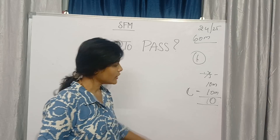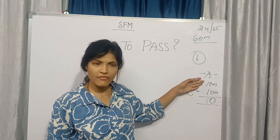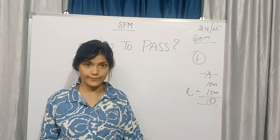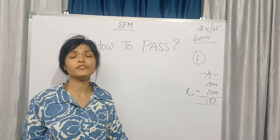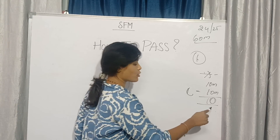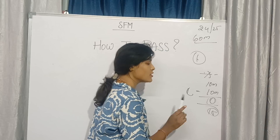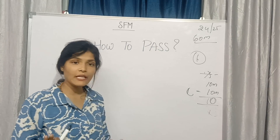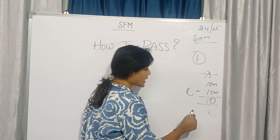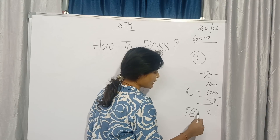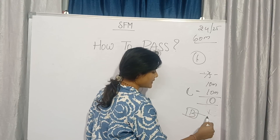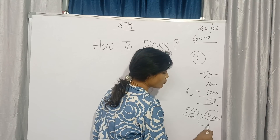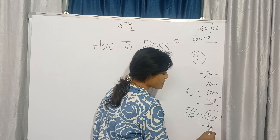Out of 20 marks, approximately 10 marks you can score — about 5 marks in Part A and 5 marks in Part C just for attempting. If you have written well, approximately 15 marks you may get. We can assume 10 marks. The remaining 14 marks you need to carry from Part B.